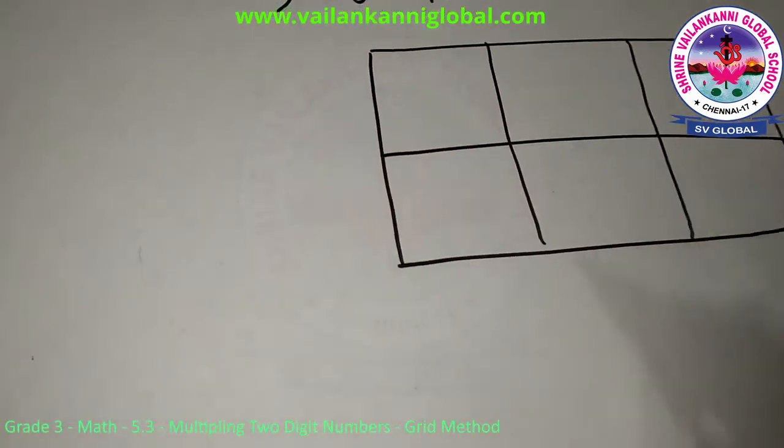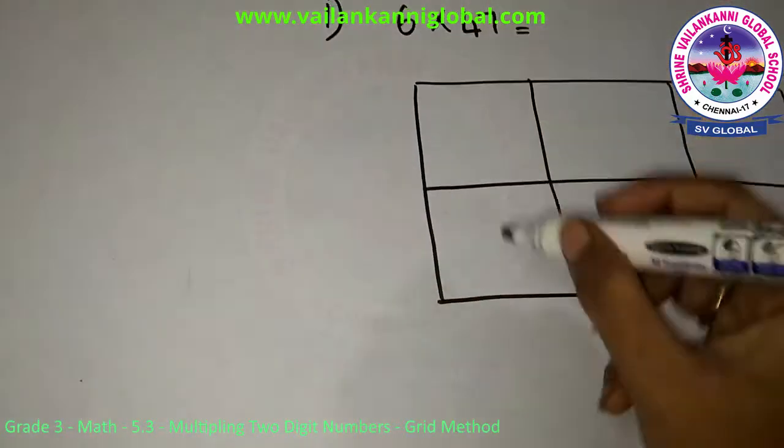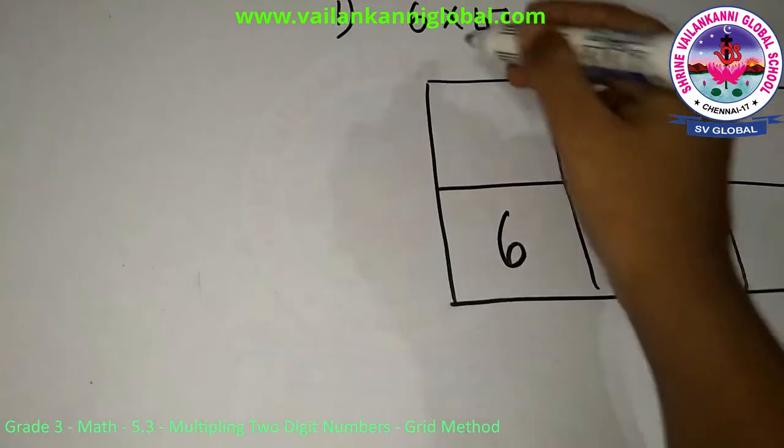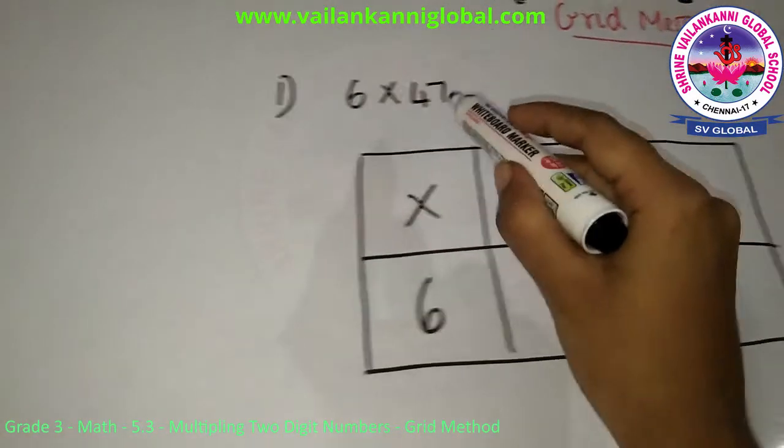And I will divide it like this. So my 6 will go here. And my multiplication will go here. And this 47, I will split it as tens and ones as 40 and 7.